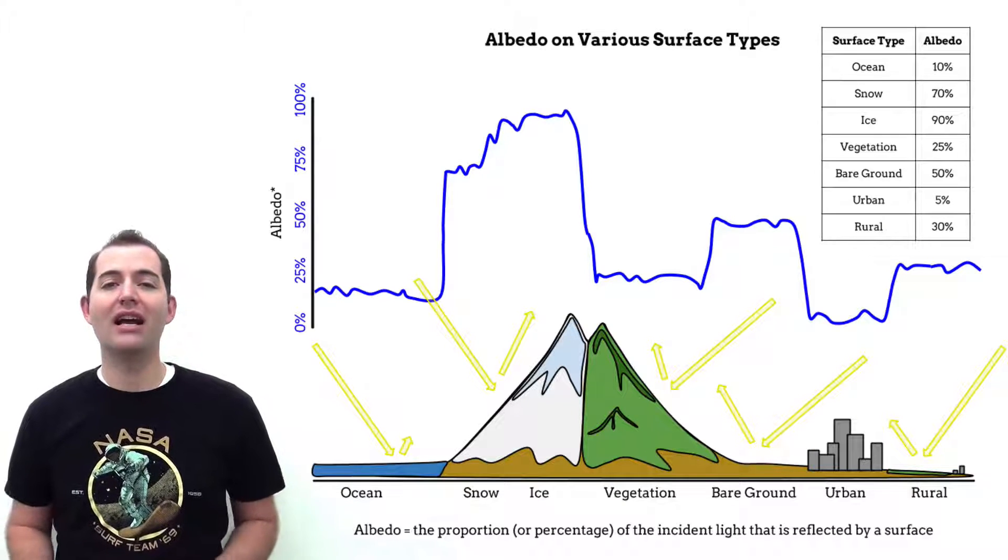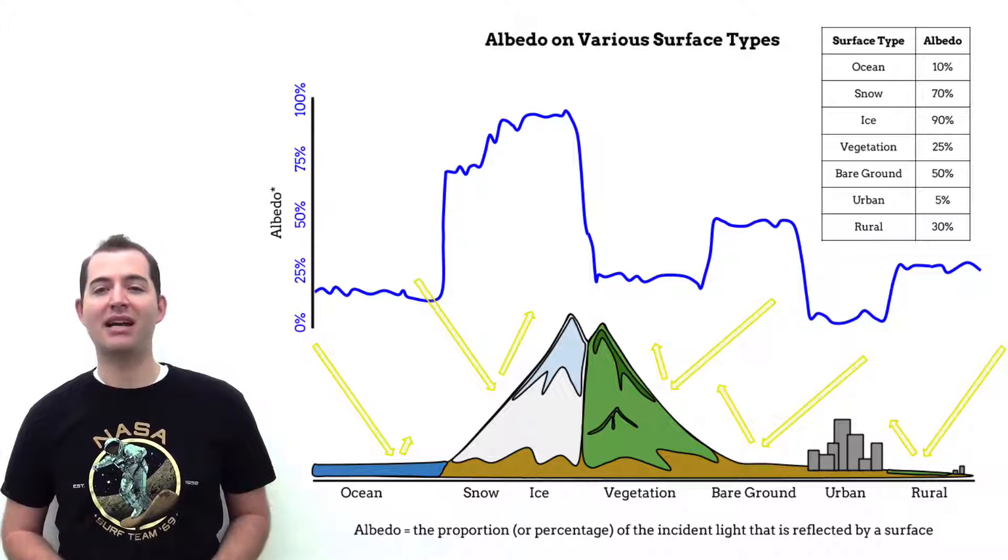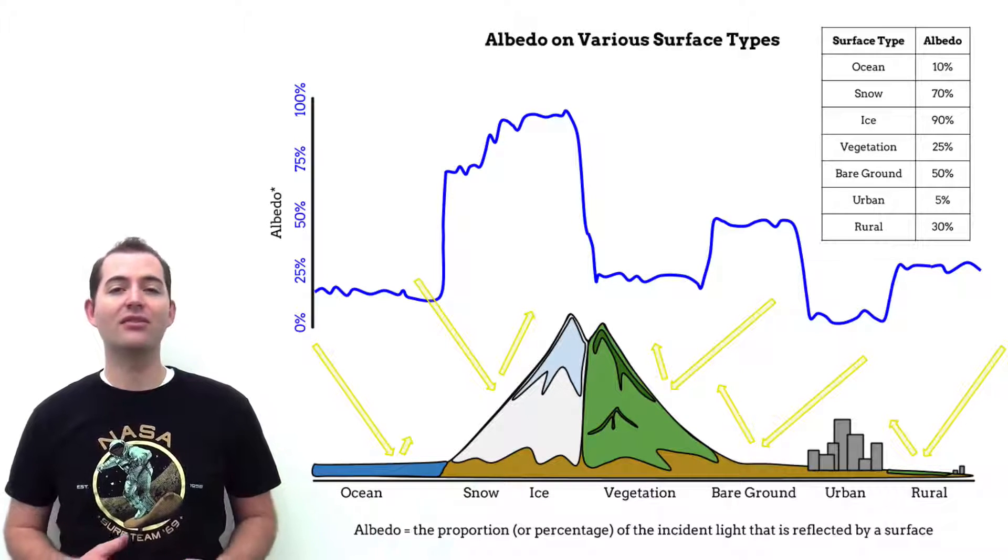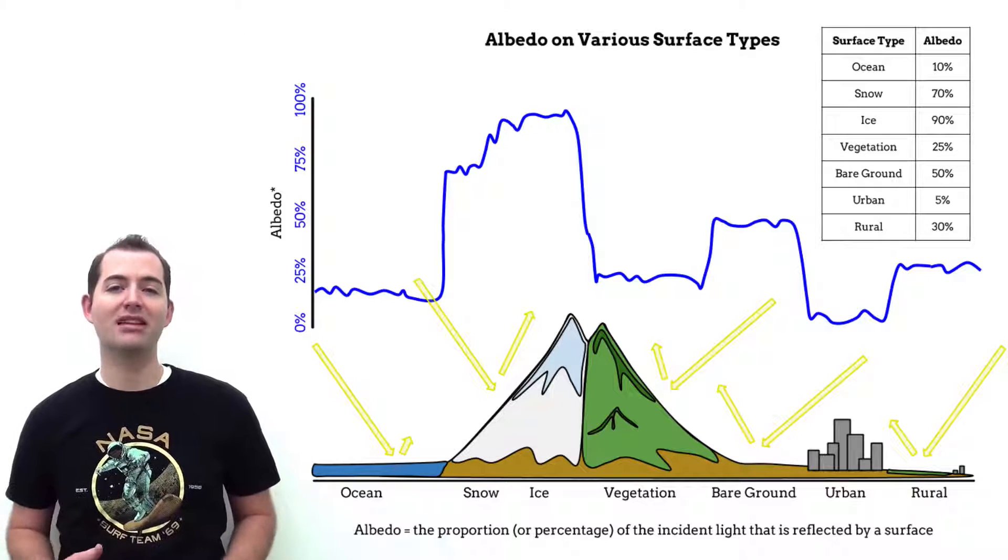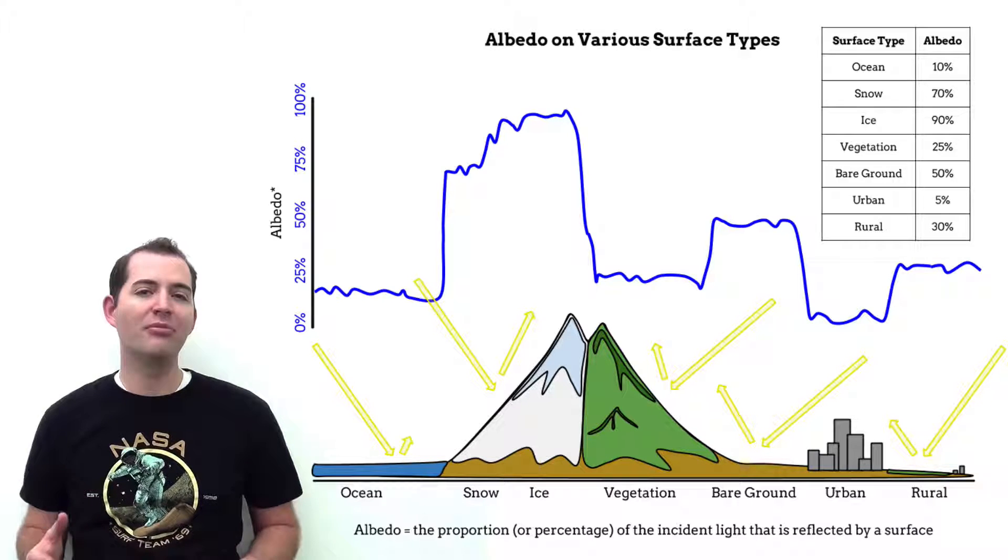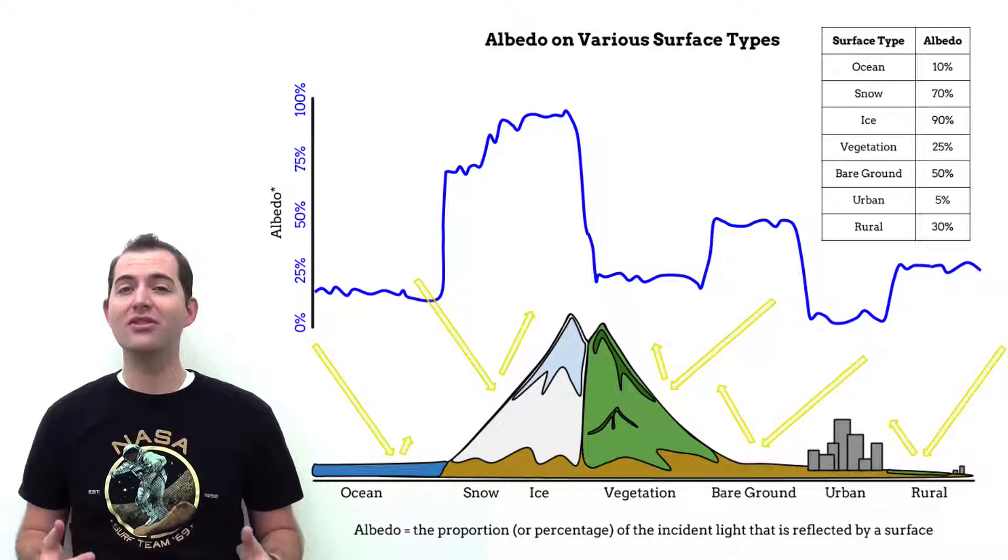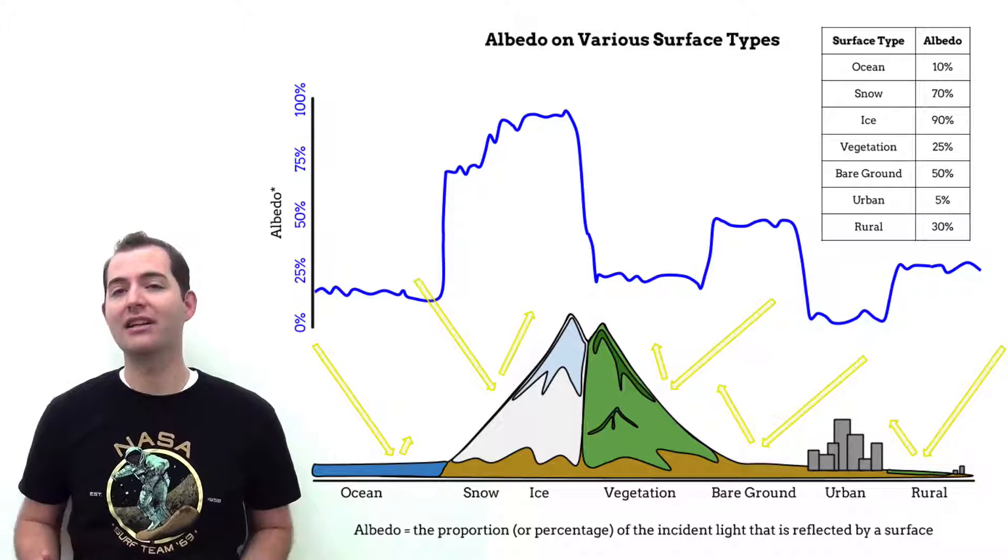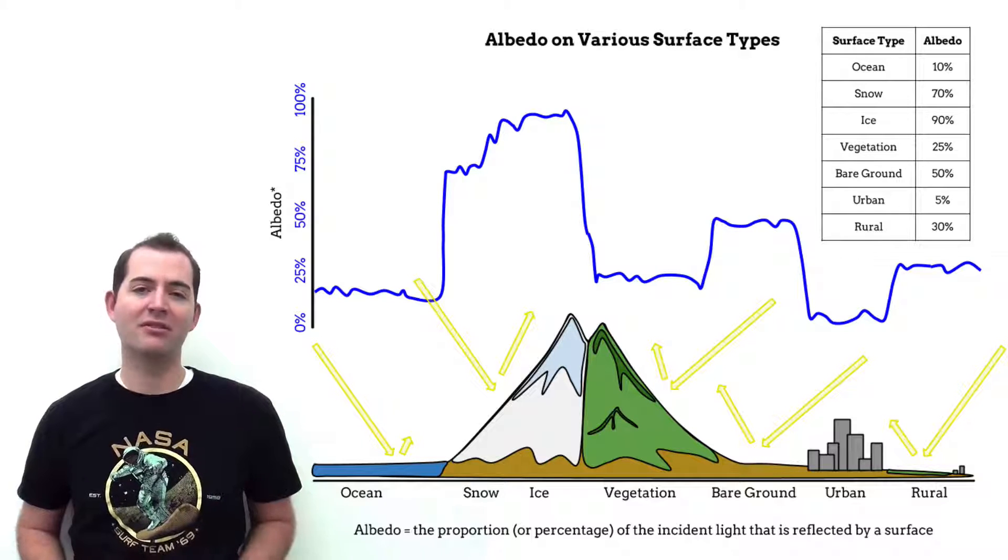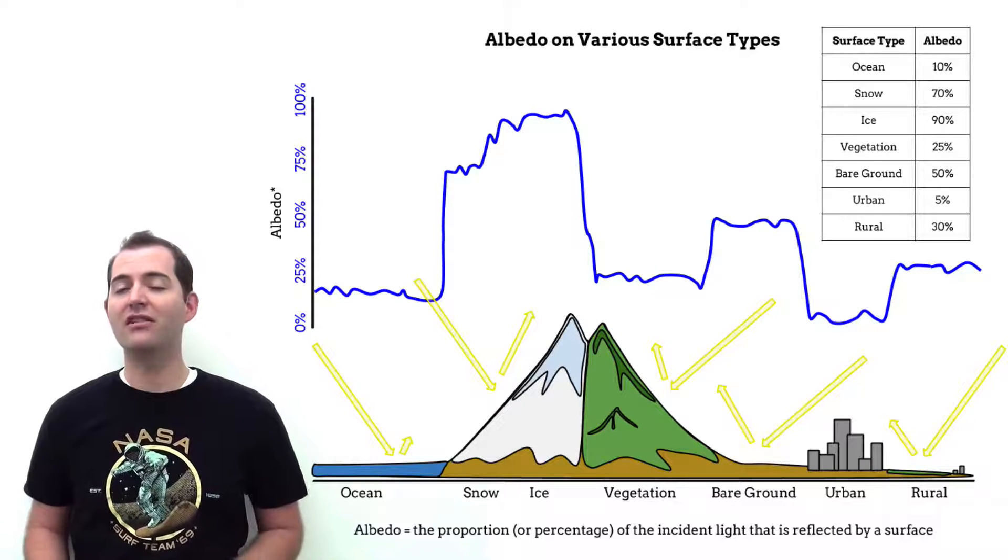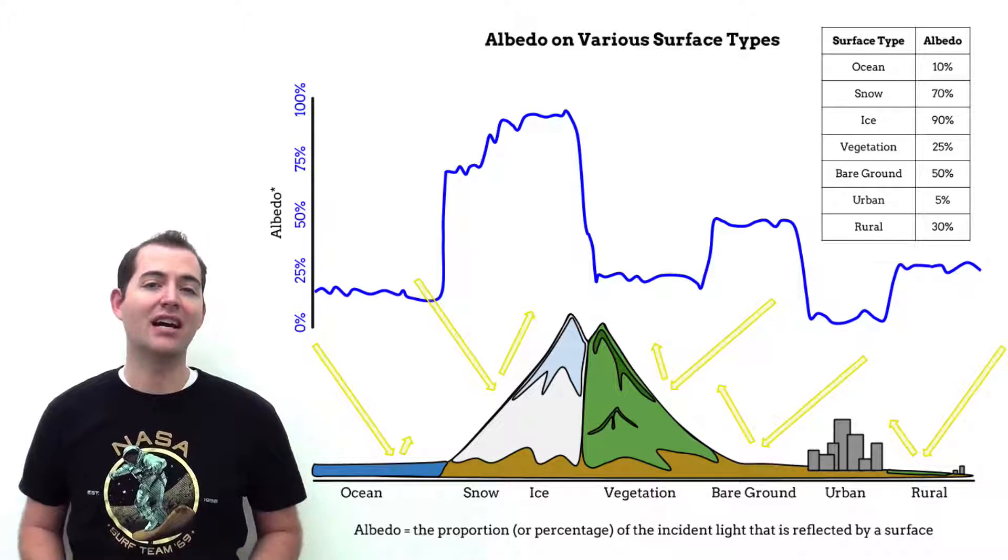For example, water has a low albedo with less than 10% of the light hitting it being reflected back into space. Bare ground such as sand or dirt typically has an albedo between 10 and 30%. Crops or other vegetation typically have an albedo between 15 and 30%, and snow is known as having a high albedo or high reflectivity. Old snow typically has an albedo of about 50%, whereas new snow or freshly fallen snow has an albedo of around 70% or in some cases even higher.